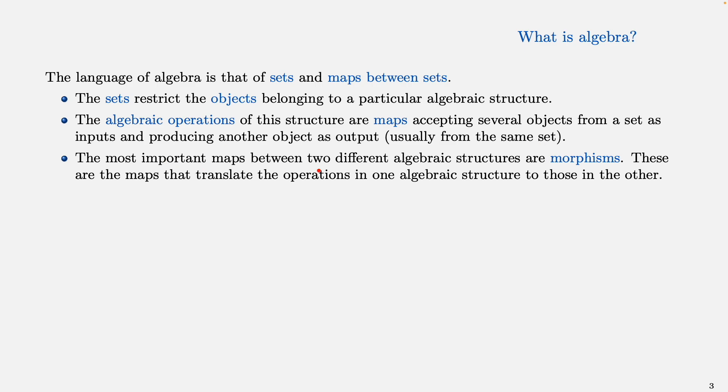And the most important maps between two different algebraic structures are called morphisms. These are maps that translate the operations in one algebraic structure to the operations in the other algebraic structure. So morphisms are maps that exhibit some kind of compatibility between two algebraic structures.